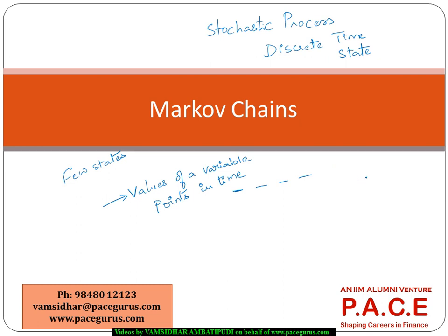Typically what we see in these examples: in the insurance industry we may see a no-claim bonus system; in the HR world, we may see a performance appraisal system; or in the banking and risk management world, we may look at a credit rating system. All these can very well be modeled as Markov chains because they operate in discrete state as well as discrete time space, and they satisfy the Markovian property.